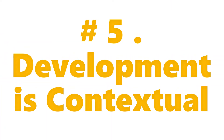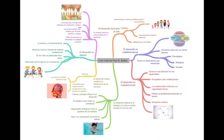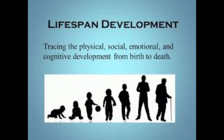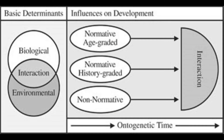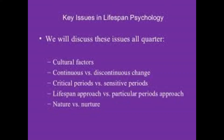Development is contextual. Individuals respond to and act upon contexts including one's biological makeup, physical environment, cognitive processes, and social, historical, and cultural contexts. Within the contextual view, the first source of influence is normative age-graded influences — biological and environmental influences that are similar for individuals in a particular age group.